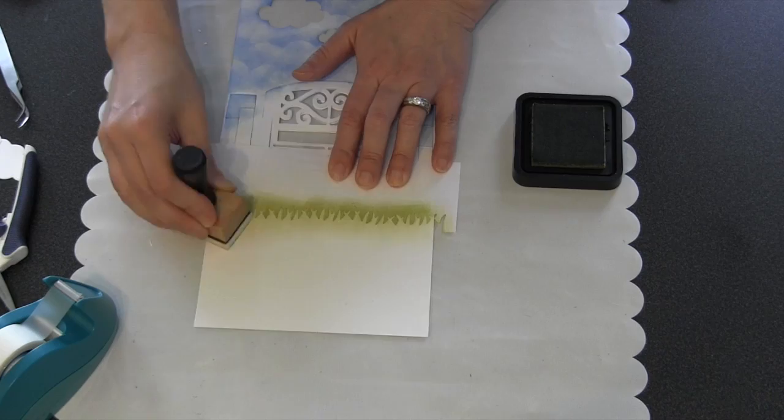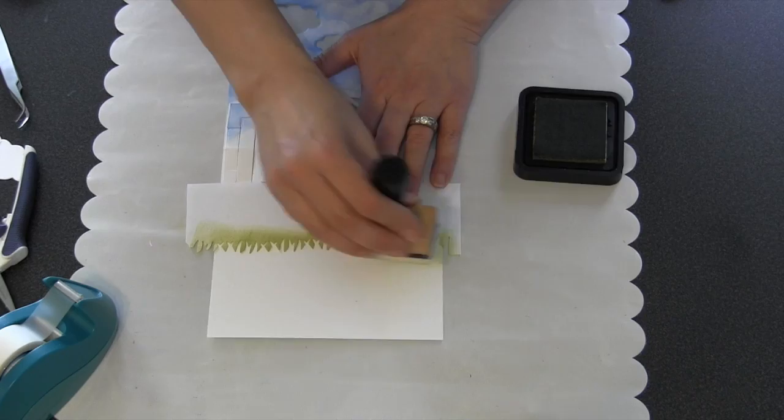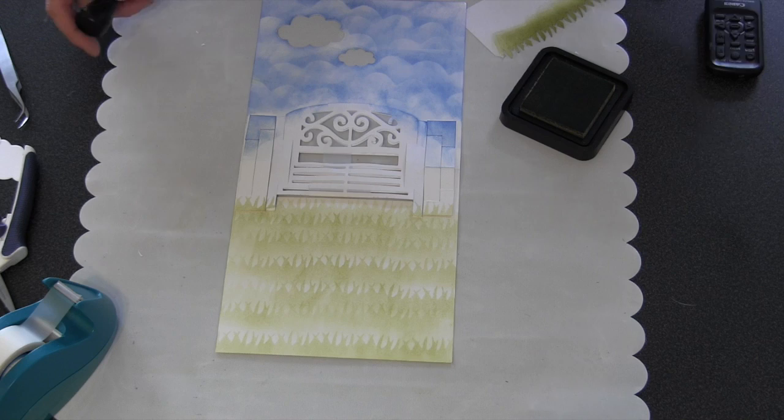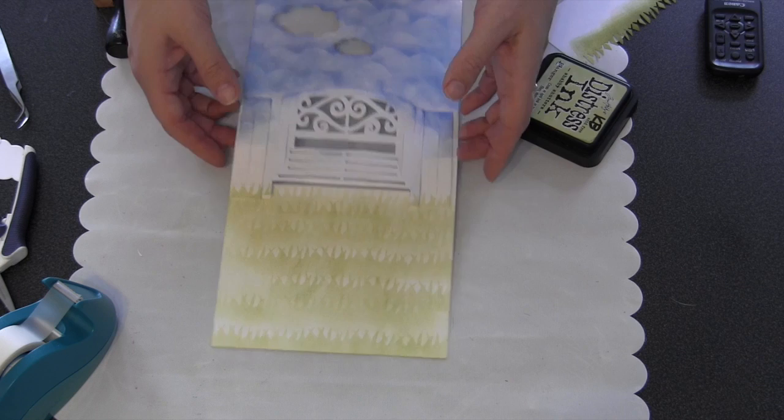In this case I'm going to work from the top down using some green ink, and I like to do more of a pounce in this case. I'm just kind of pouncing straight down over the grass template and just continuously moving that down to get new little areas of grass. Then when I make it down to the bottom of the card and remove the mask, then I'll have a grassy seam like you see here.